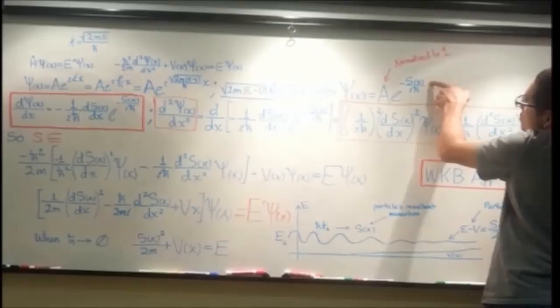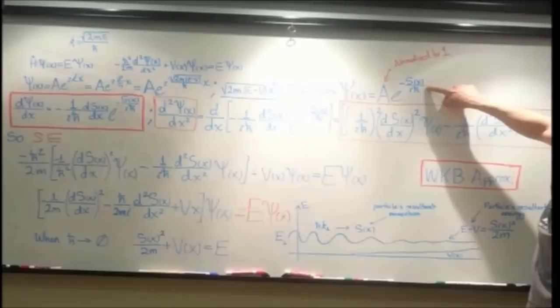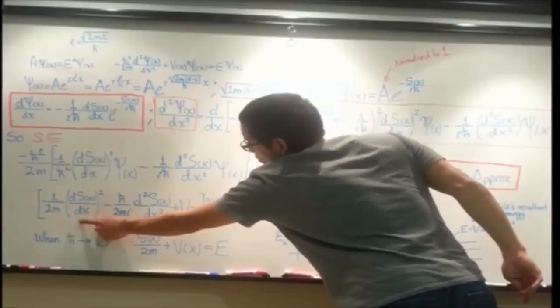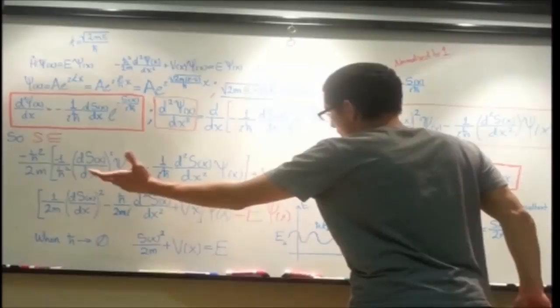So we'll do the first and second derivatives in terms of this, or with respect to this function here, a function of x. And once you get these for the second derivative, we can plug it back into our Schrödinger equation and just after making the substitution we can make cancellations.